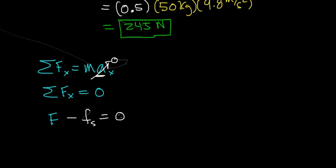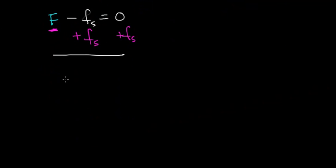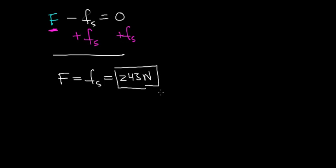There are two forces acting in the x direction: the applied force in the positive x direction, and the opposing static frictional force in the opposite direction. Those forces add up to 0. Solving for the applied force — by adding the force of static friction to both sides — we get that the force equals the force of static friction, which is 245 newtons. So a minimum force of 245 newtons is required to get this object to start moving from rest when that force is directed completely along the horizontal axis.